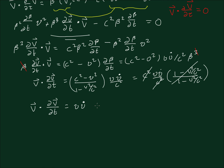We've proven that V dotted with dV/dt is equal to V times V-dot. This is quite different from the naive result V_x·V-dot_x plus V_y·V-dot_y plus V_z·V-dot_z that you'd get if you only used the three-velocity without considering the four-velocity at all.